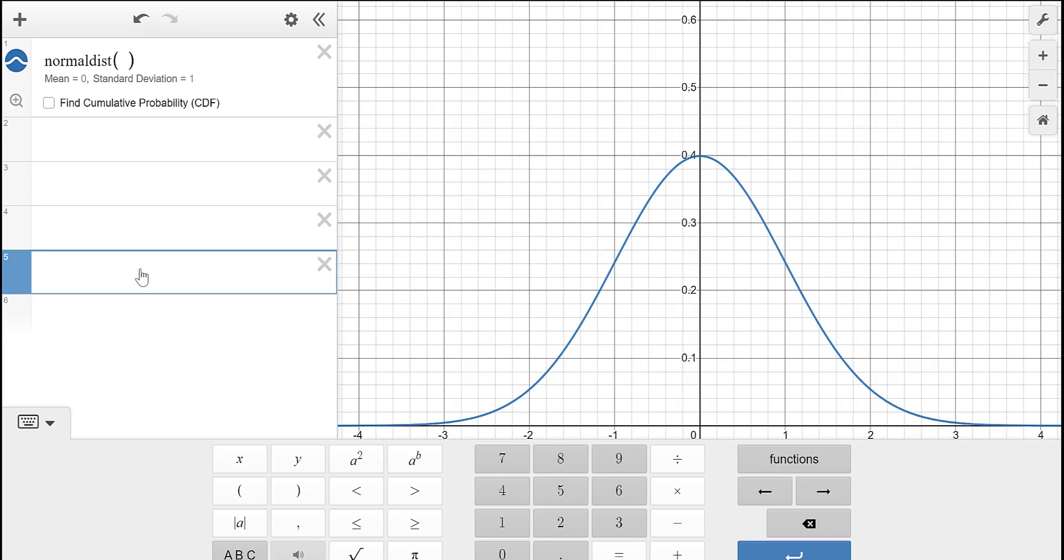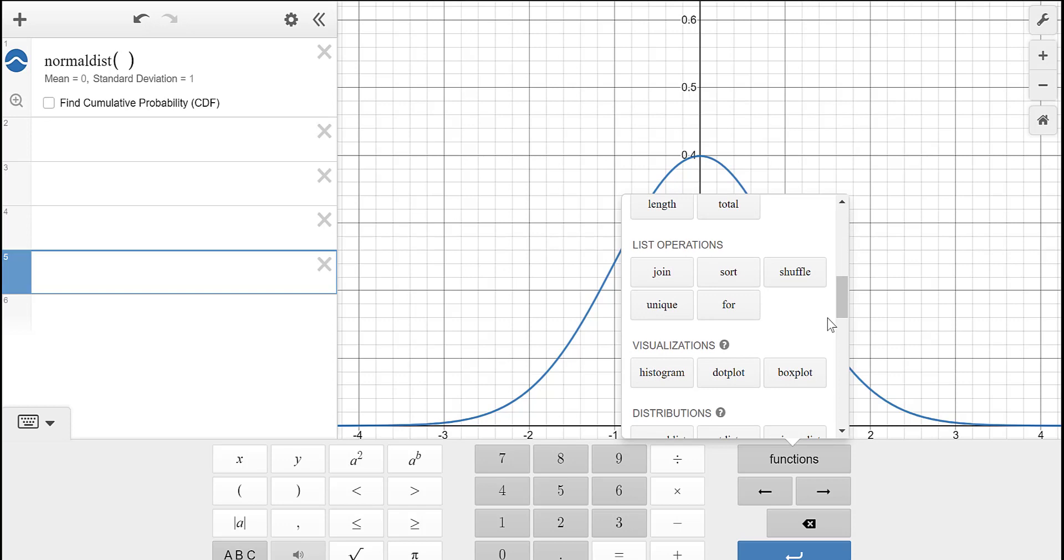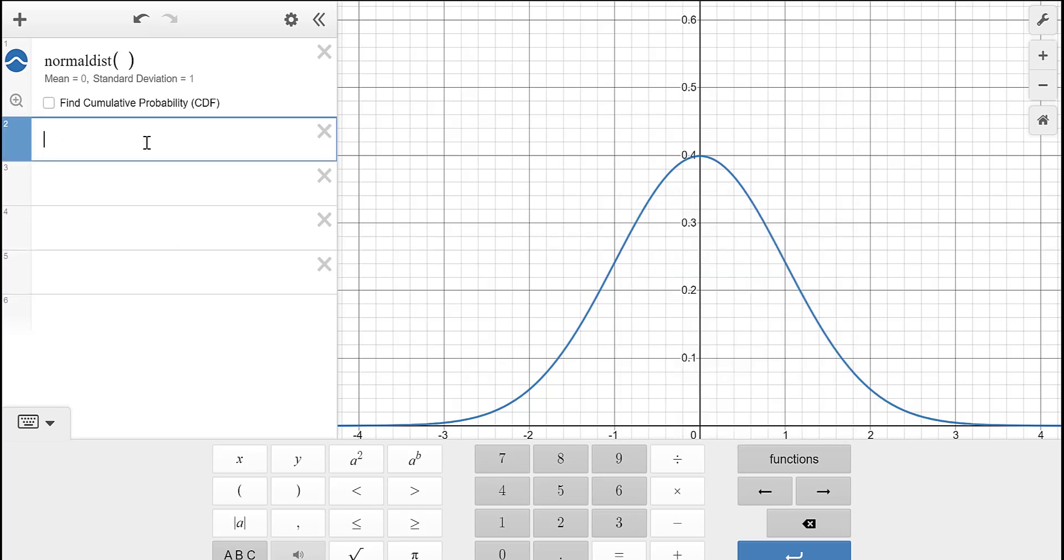So hopefully you know in Desmos you can do the normal distribution by just typing in normal dist, or you can go to the keyboard, go to the functions, and you look for distribution. So let me just quickly go back and say, remember, in the normal distribution, if you want to find the cumulative, you click on the link.